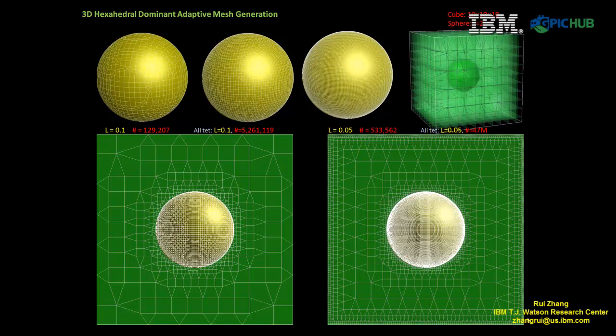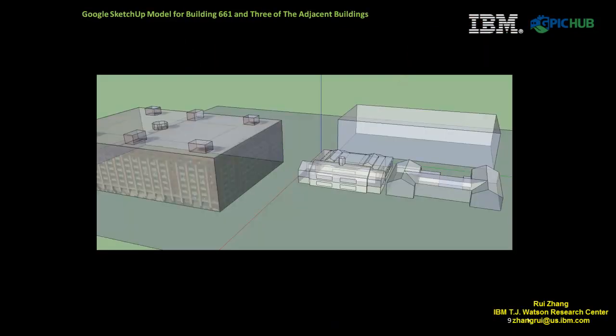The dimension of the cube is 10 by 10 by 10, and the radius of the sphere is 2. When the mesh resolution on the sphere surface is at 0.05, the total number of elements in the adaptive mesh is around 533,000. Yet, the total number of elements in a uniform tetrahedral mesh with the same resolution will be around 47 million. The adaptive mesh reduces the number of elements significantly.